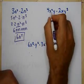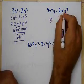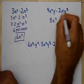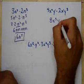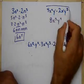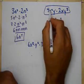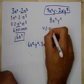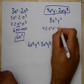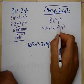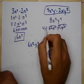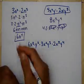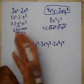Here, 4 times 2 is 8. x squared times x to the 1 — 2 plus 1 is 3. y to the 1 times y to the 3 — multiplying — gives y to the 4. Remember, we can rearrange this because everything is multiplication: 4 times 2 times x squared times x¹ times y¹ times y³. 4 times 2 is 8, giving x to the 3rd and y to the 4th.